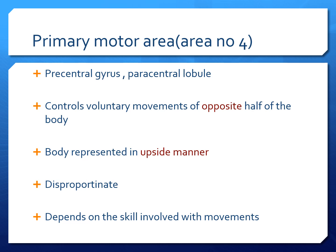So the key points for the motor area: area number 4 is the primary motor area. The pre-central gyrus and the paracentral lobule form the primary motor area. They control the voluntary movements of the opposite half of the body. The body is represented in an upside-down manner, and there is disproportionate representation of the various parts of the body depending on the skill involved in movements.